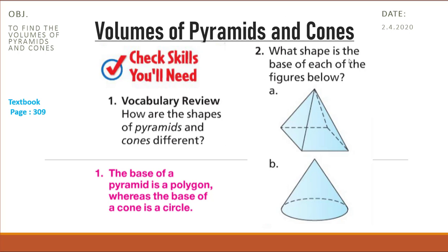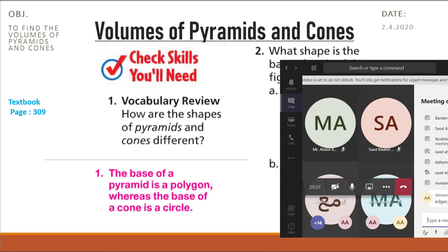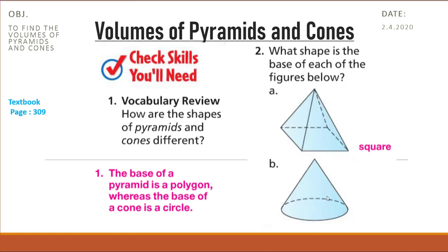What's the shape of the base in each of these two figures? In the first one, the base in this pyramid is a square, and of course this is a square pyramid. In the second one, the base is a circle.